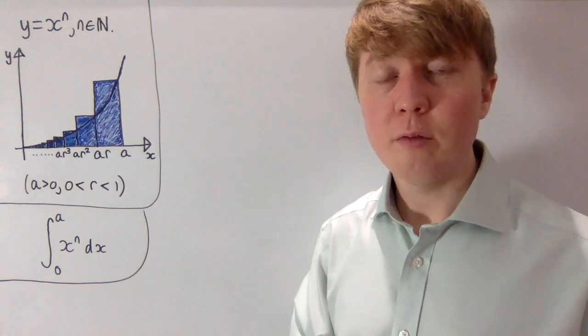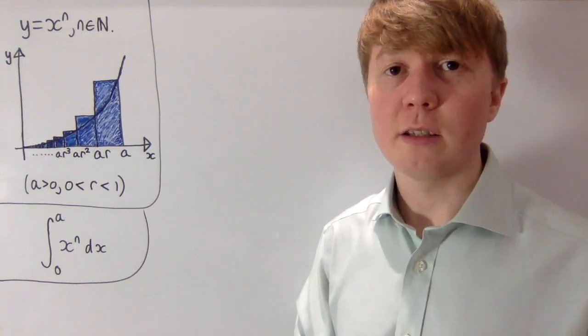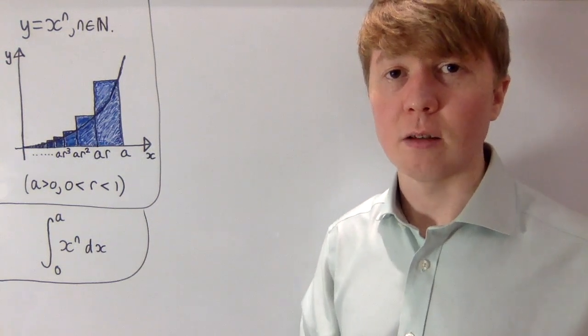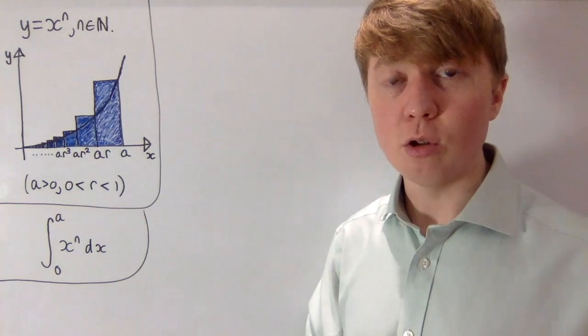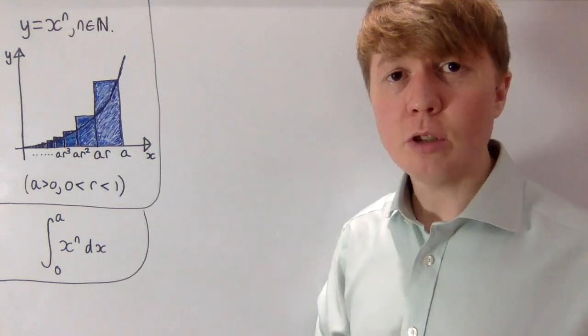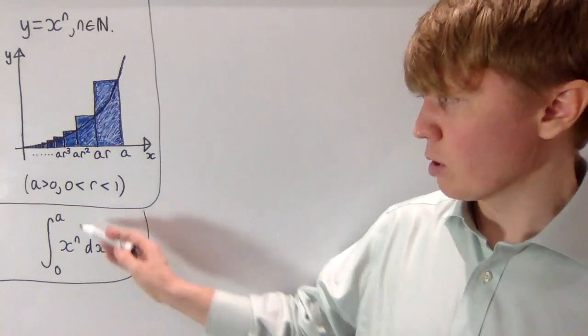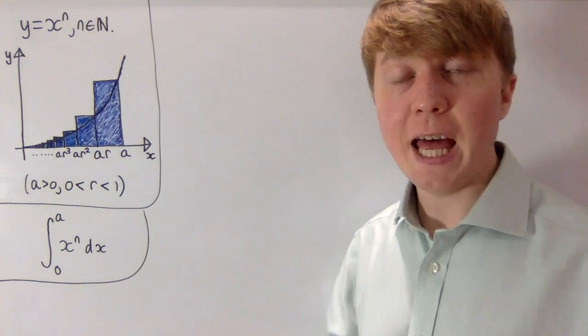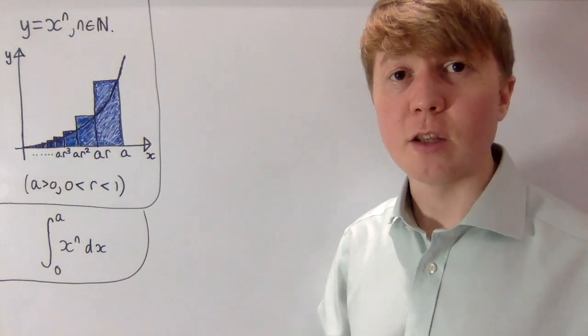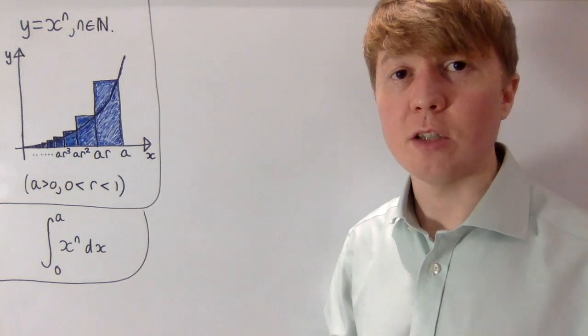We're going to look at a neat derivation for the integral of y equals x to the power of n, which actually dates all the way back to Fermat. We'll focus on the integral between zero and some positive number a of x to the power of n, where n is a positive integer.